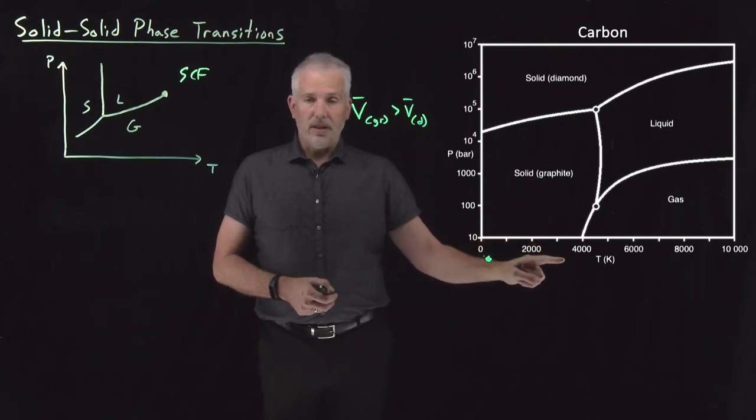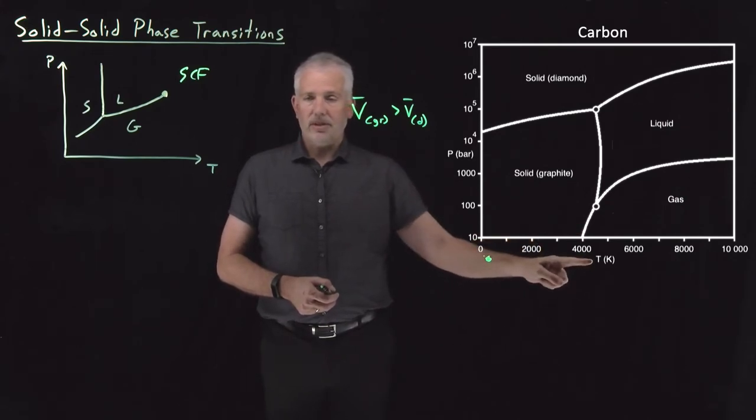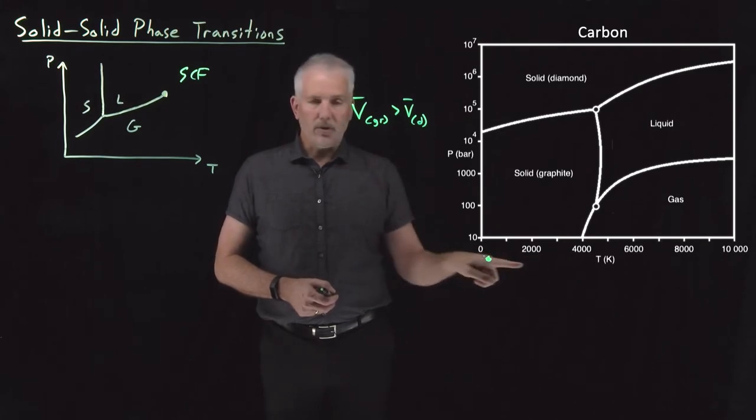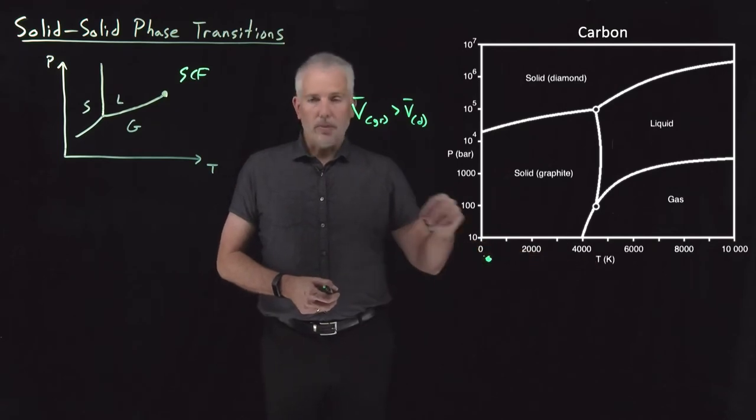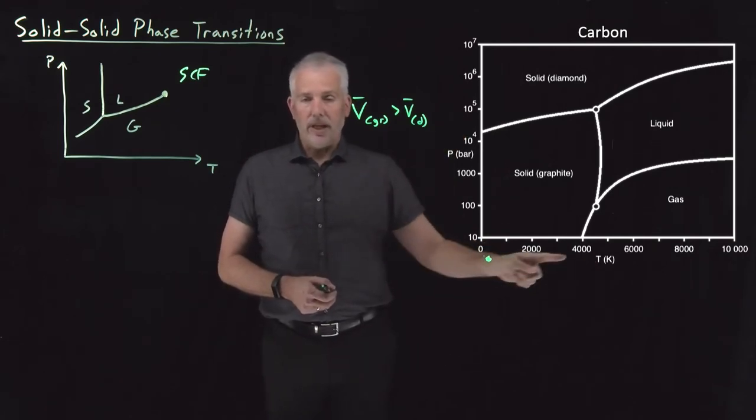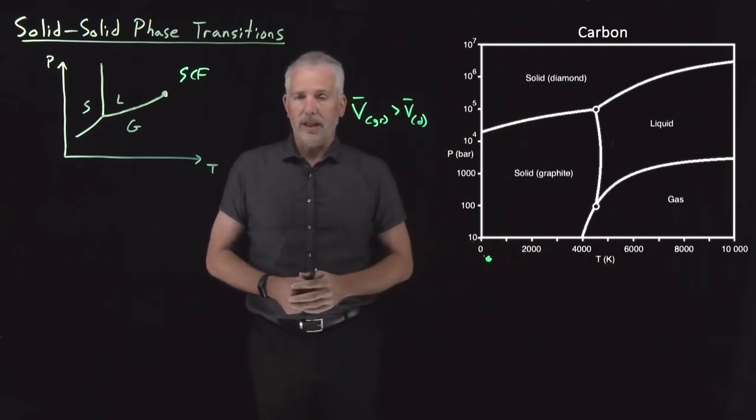It's going to cross the solid-gas coexistence curve rather than a solid-liquid coexistence curve. We can't melt graphite at room pressure. It will sublimate. Atoms of carbon will evaporate off the graphite sample and enter the gas phase directly without forming liquid carbon.